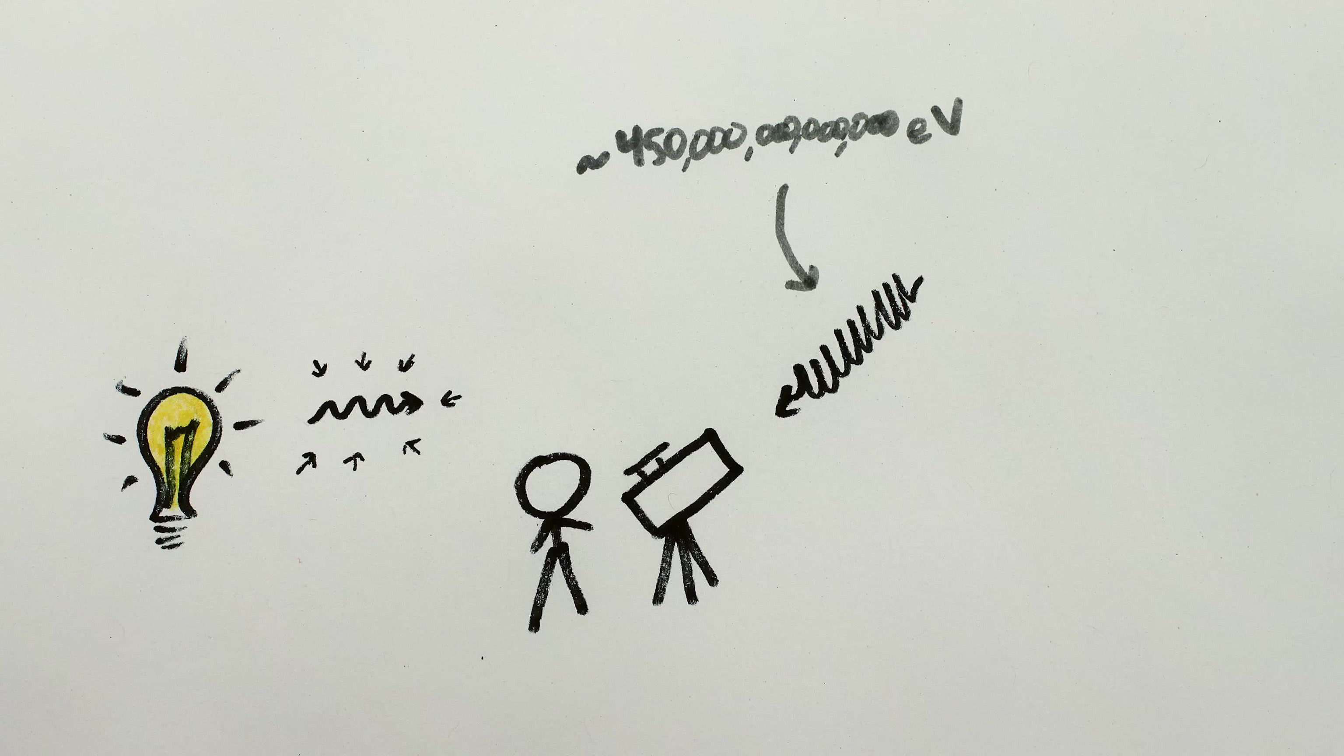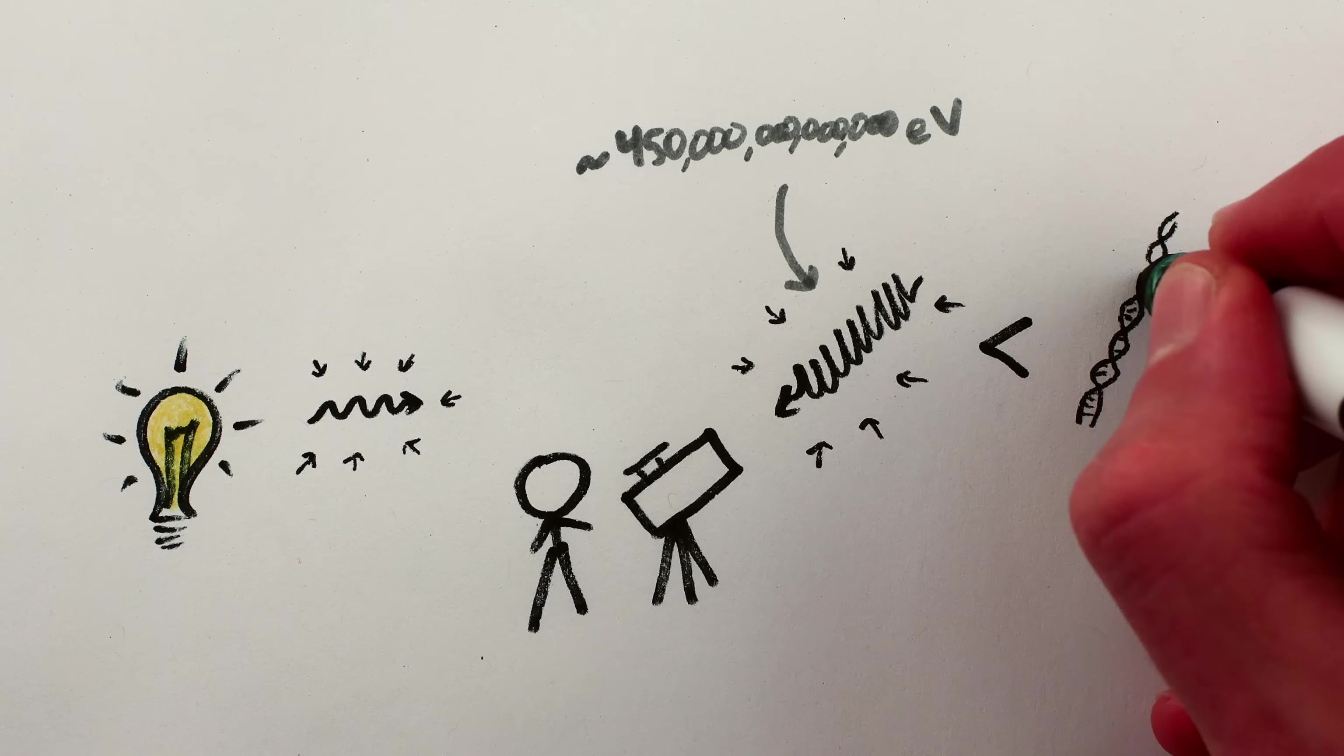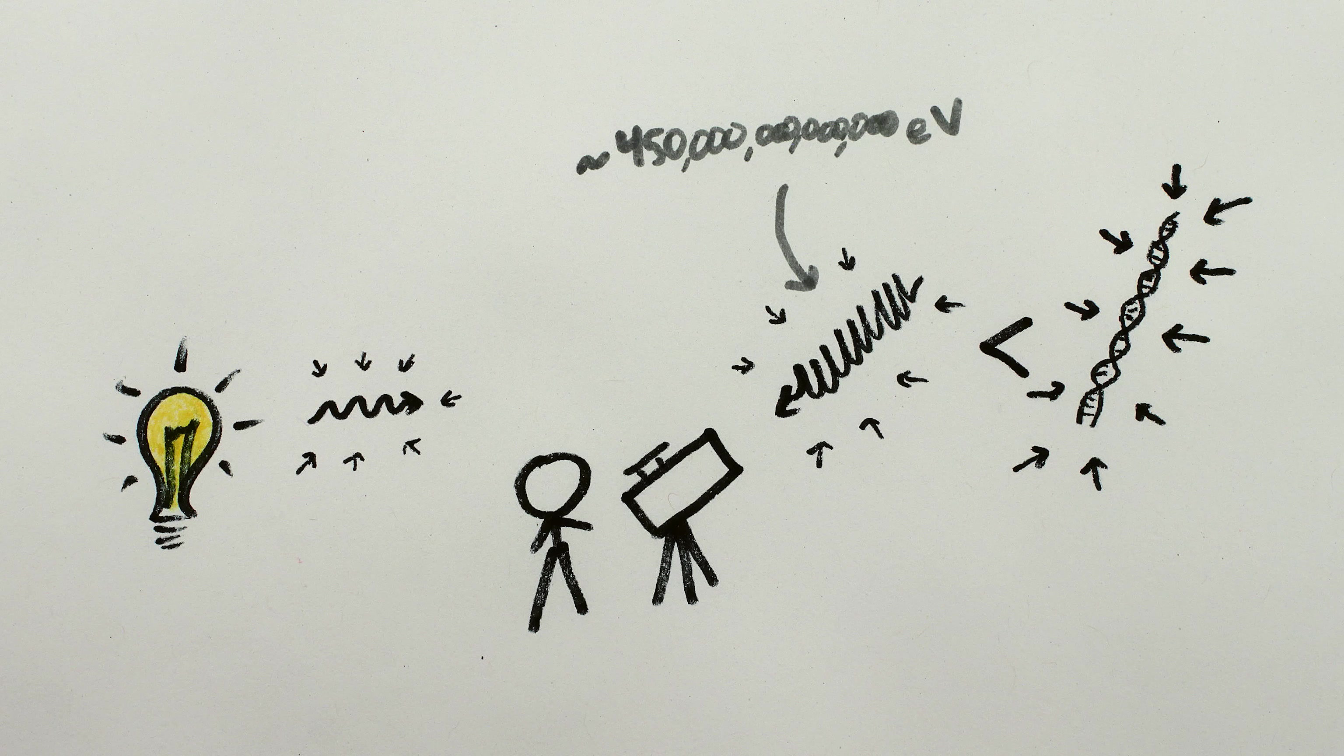Even the most energetic photon we've ever measured had a smaller gravitational field than a strand of DNA, which won't allow a photon to make a noticeable shadow.